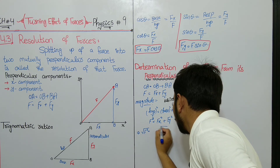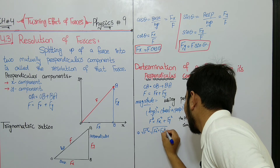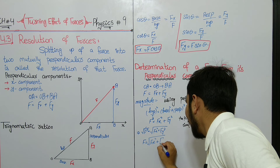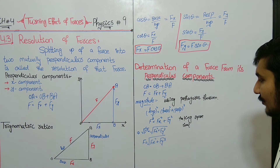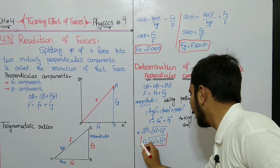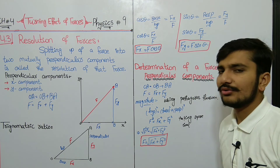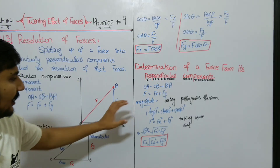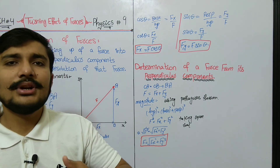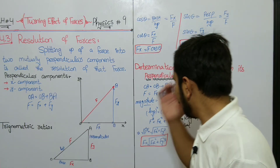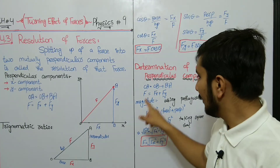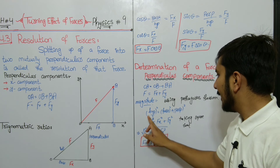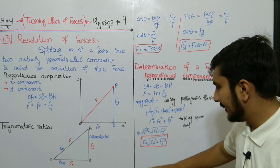F squared is equal to Fx squared plus Fy squared. Here we want to find force F. Since we have F squared, if we take the square root, the square root and square will cancel each other. Taking the square root of both sides, F is equal to the square root of Fx squared plus Fy squared. In this way, we found the force from its perpendicular components using the Pythagorean theorem.